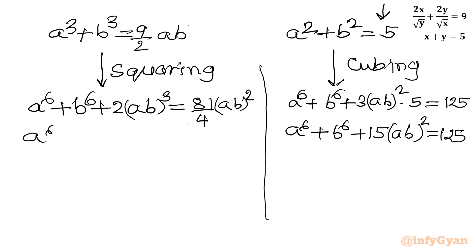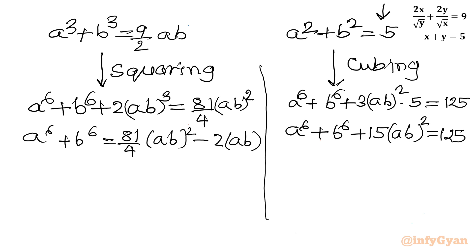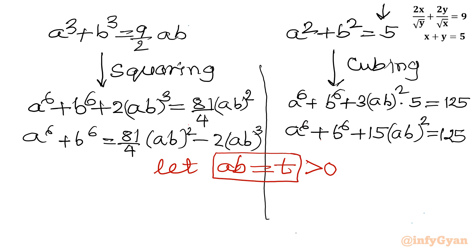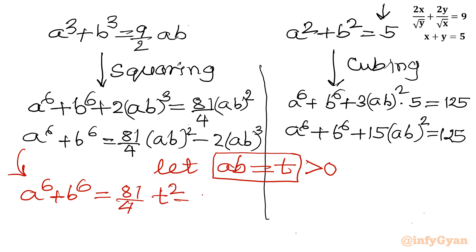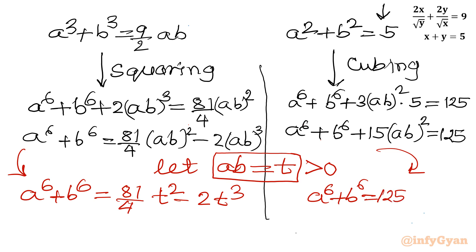From the squared equation, a to the 6th plus b to the 6th equals 81 over 4 ab squared minus 2 ab cubed. Now I introduce the substitution ab equal to t, where t must be positive since a and b are both positive. So a to the 6th plus b to the 6th equals 81t squared over 4 minus 2t cubed. From the cubing equation, a to the 6th plus b to the 6th equals 125 minus 15t squared.